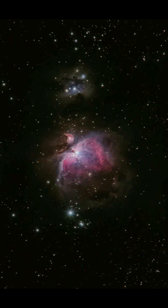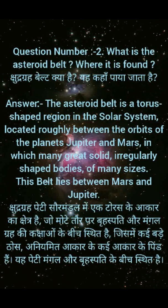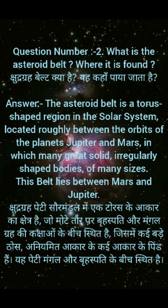Question No. 2: What is the asteroid belt? Where is it found? Pshudragraha belt kya hai? Yeh kahaan paaya jata hai? Answer: The asteroid belt is a torus-shaped region in the solar system, located roughly between the orbits of the planets Jupiter and Mars, in which many great solid, irregularly shaped bodies of many sizes exist. This belt lies between Mars and Jupiter. Pshudragraha peti saur mandal mein ek torus ke aakar ka kshetra hai, jo mootay torpar Brahaspati aur Mangal grah ki kakshaaon ke beech sthit hai, jis mein kai bade thos aniyamit aakar ke kai aakaar ke pind hain. Yeh peti Mangal aur Brahaspati ke beech sthit hai.